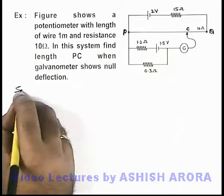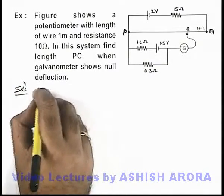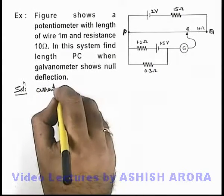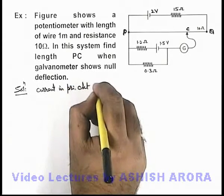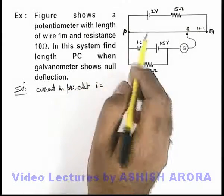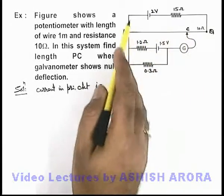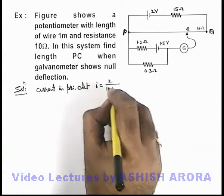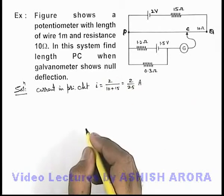Now if we solve the problem, first let us calculate the current in the primary circuit. Here all parameters in primary circuit are known, so current in primary circuit can be directly given as i equals the primary emf is 2 volt and the total resistance here is 15 ohm and 10 ohm, so it'll be 2 by 10 plus 15, so it'll be 2 by 25 ampere.